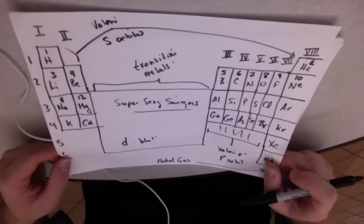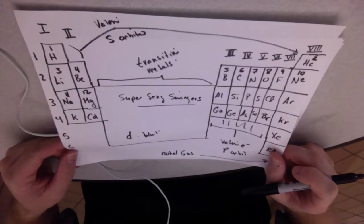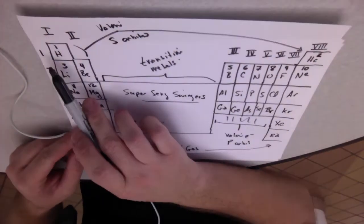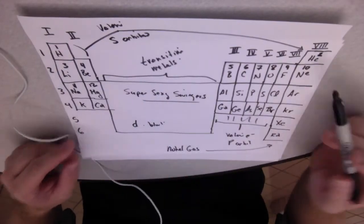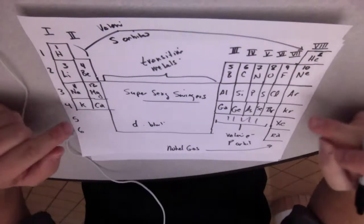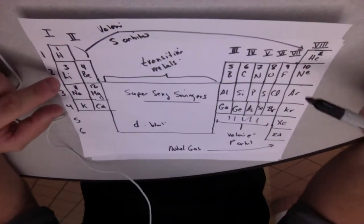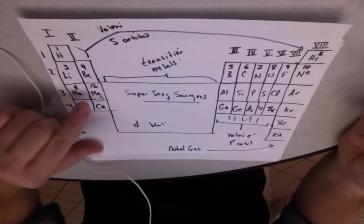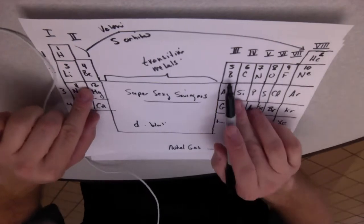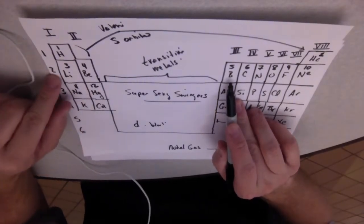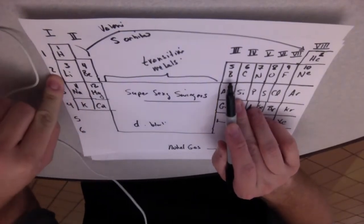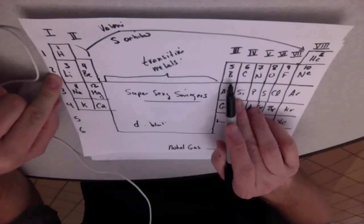Hey Randy, this is Chris back again. Let's go ahead and pick up where we left off. We were just going through the periodic table of elements. Remember the periods are horizontal rows, which tell us that if I have an element or an atom in a certain period, that tells me that there are that many energy levels.